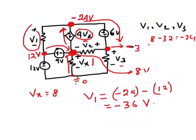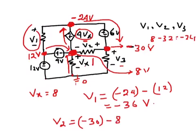So this node is minus 30 volts. Now looking at V2, the positive side of V2 is at this minus 30-volt node, and the negative side is at the 8-volt node. So V2 is minus 30 minus 8, which gives us minus 38 volts.